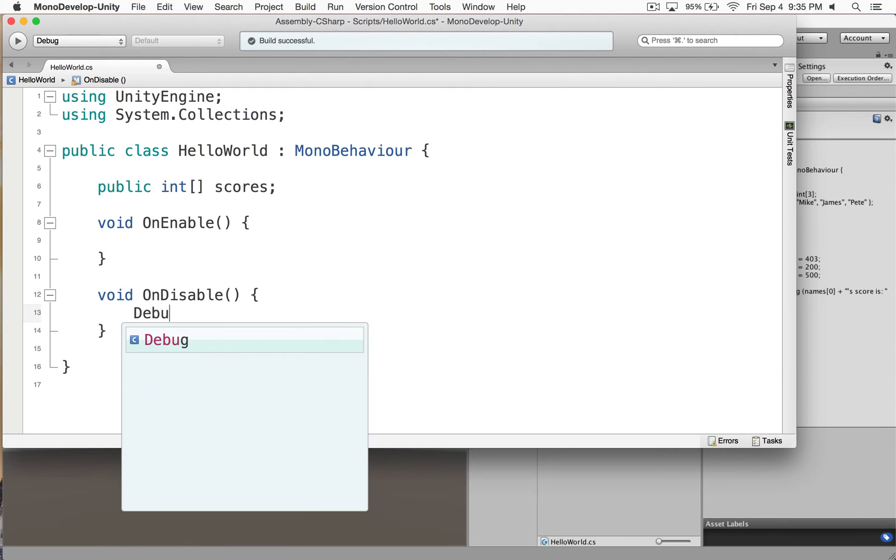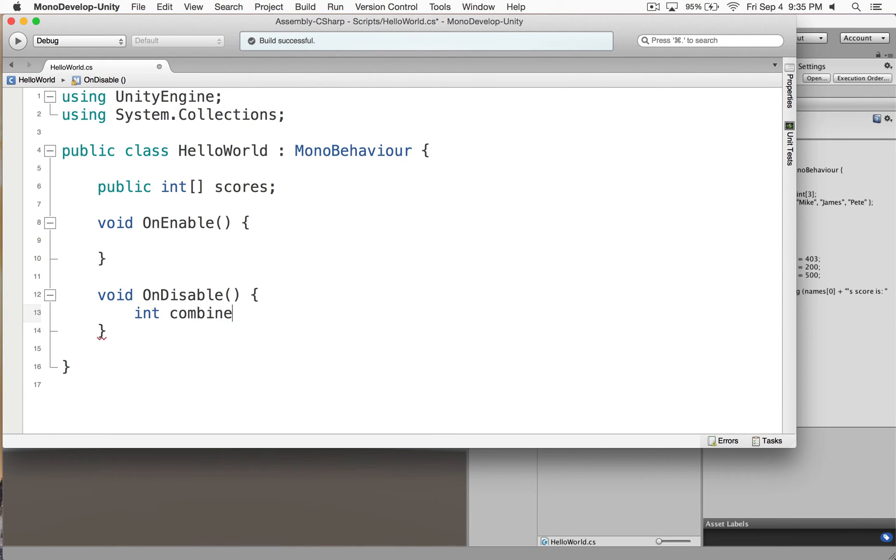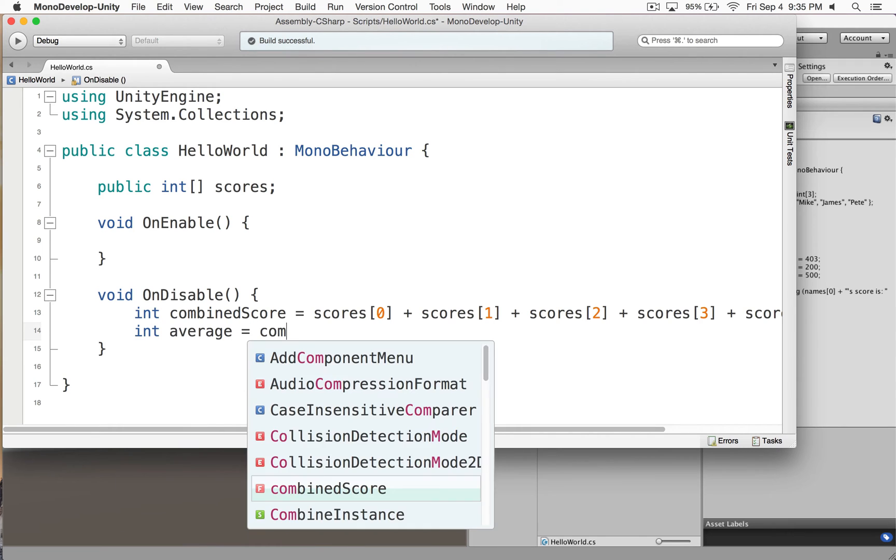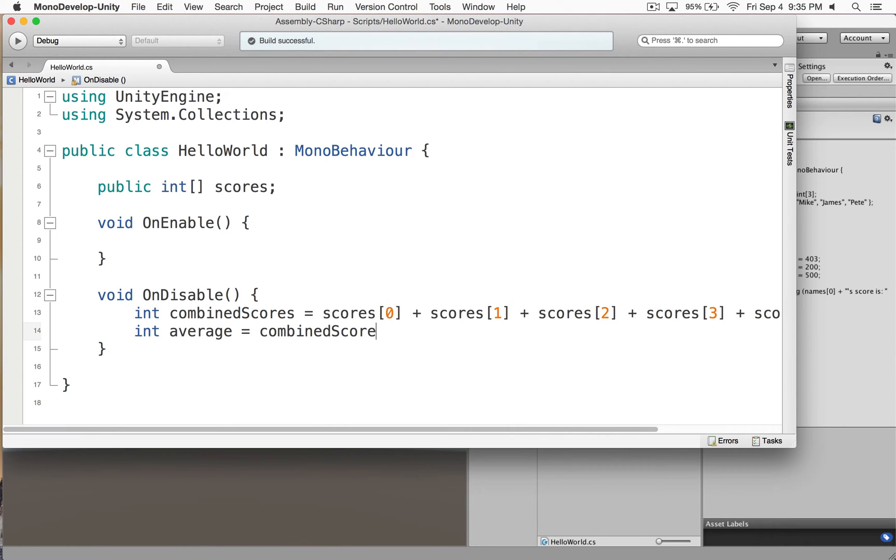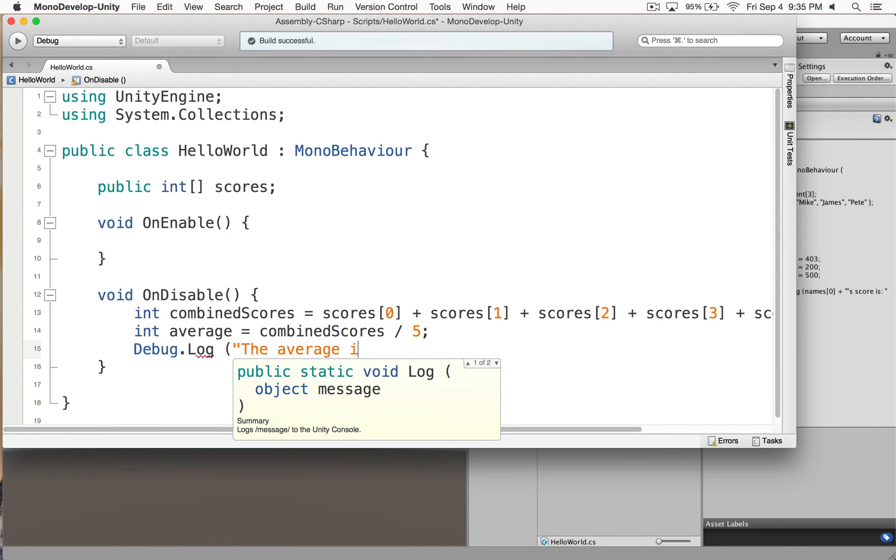Next, what we'll do is on disable, we'll calculate the average. Here we have the code already set, and I'll cover this in just a moment. But as I was typing it, hopefully some of you may have noticed some problems with this. And I'm not talking problems of a syntax nature, meaning I didn't make any typos, but rather problems from a conceptual level. Can you see what's wrong about this code?